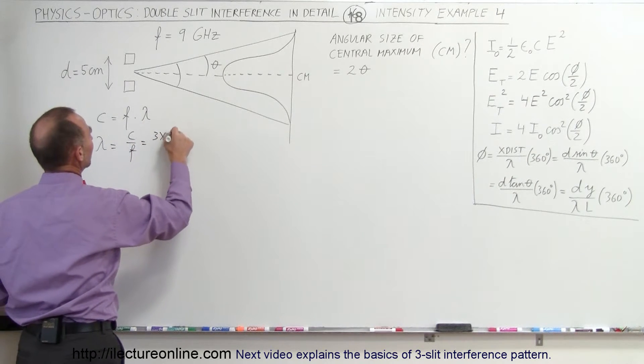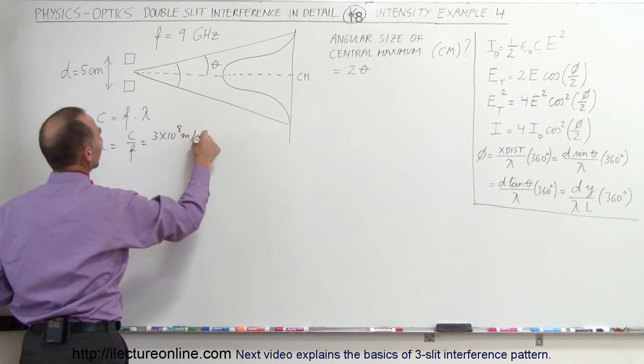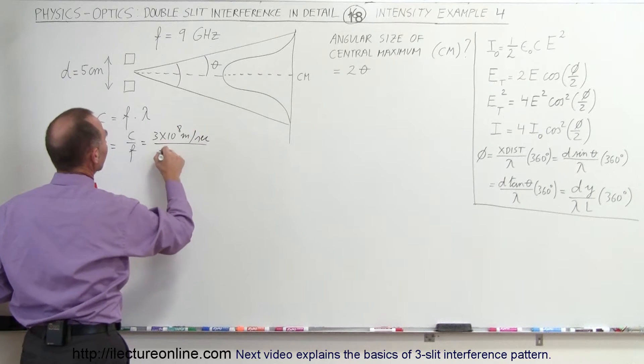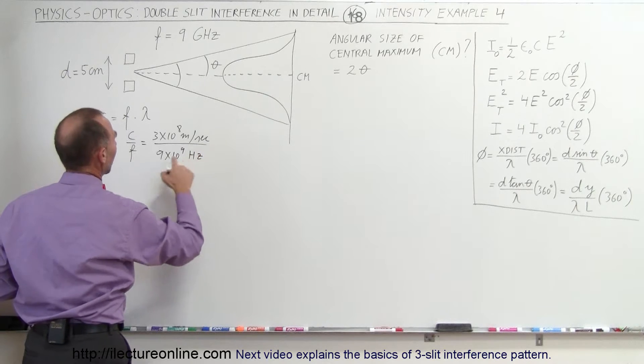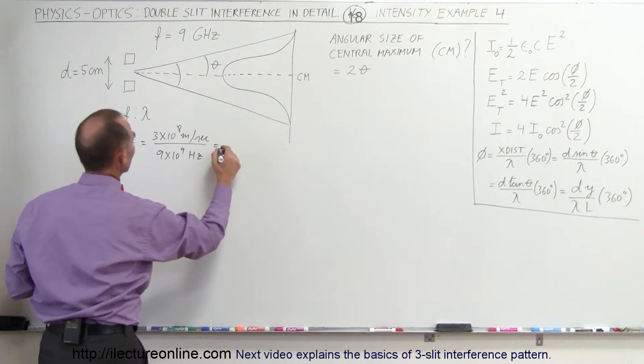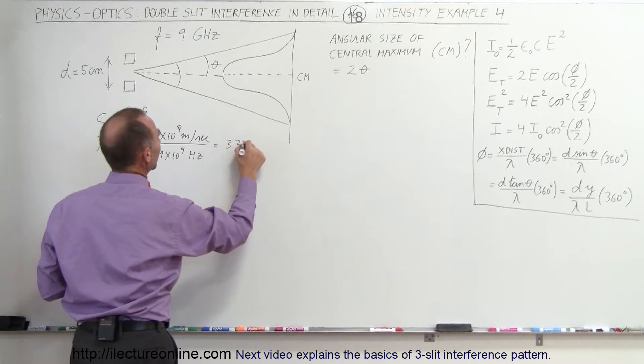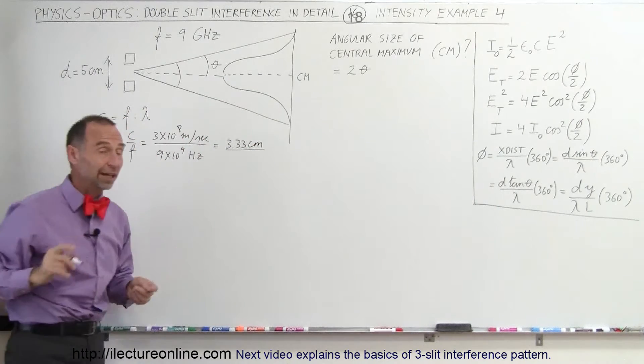So the wavelength equals C divided by the frequency, which is 3 times 10 to the 8 meters per second divided by 9 times 10 to the 9th hertz. That equals 3.33 centimeters. That's the wavelength.